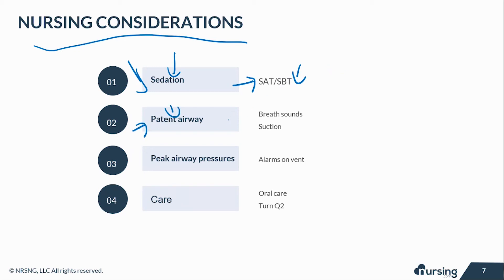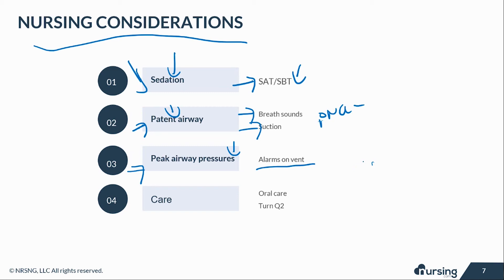Always check for a patent airway, listen for breath sounds, and suction as needed. Make sure to prevent pneumonia. Monitor peak airway pressure — the vent alarms will go off if pressures become elevated. If the number is high, it means there is increased pressure needed to inflate the lungs. It could be something simple like the patient needing suction, or it could indicate decreased lung compliance, meaning the lungs are getting stiffer.